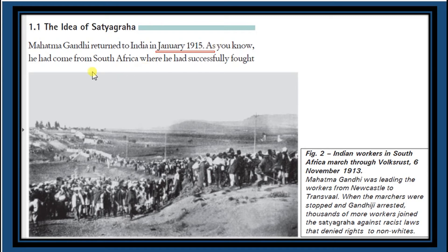Mahatma Gandhi returned to India in the year 1915 from South Africa. He had originally landed in South Africa to practice as a barrister or lawyer. At the request of Gopal Krishna Gokhale, who is considered the political guru of Mahatma Gandhi, he returned to India in the year 1915.